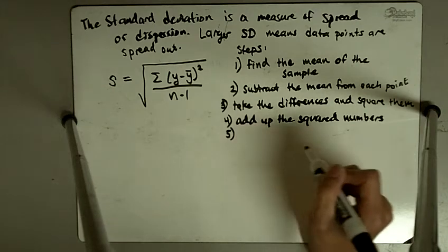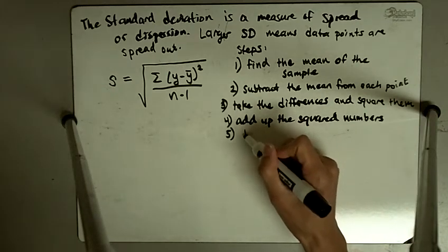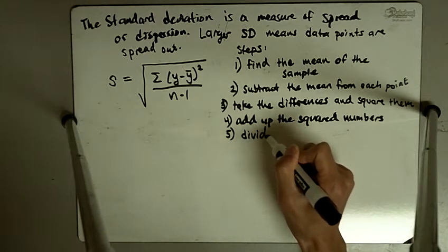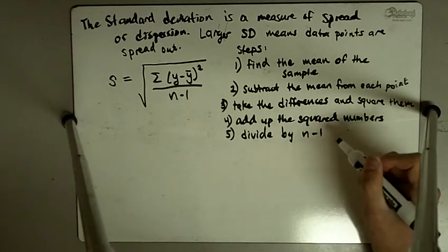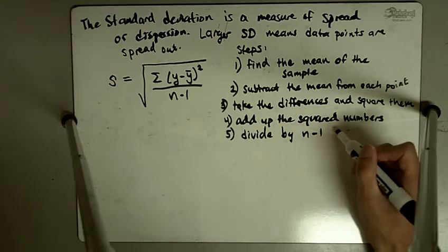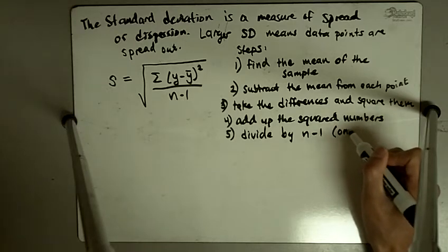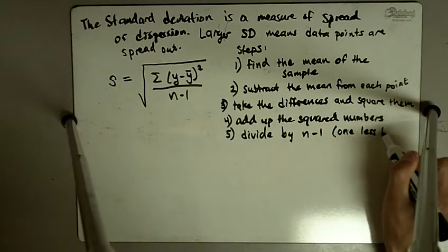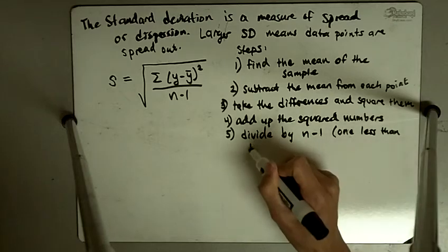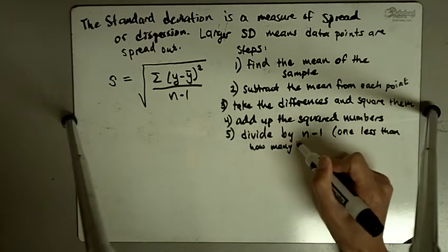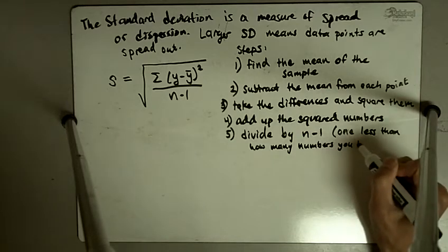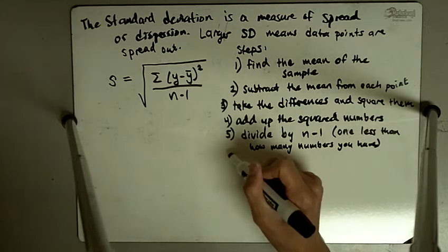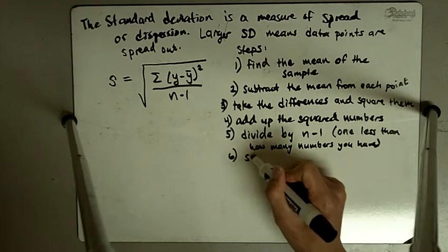Next, then you take that sum and you divide by n minus 1. N is the number of numbers you have, so n minus 1 is one less than how many numbers you have. And finally, the last step is to take the square root.